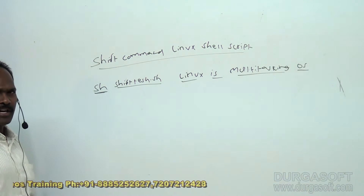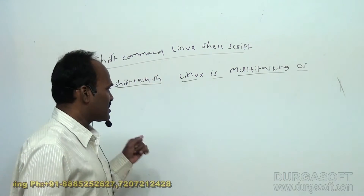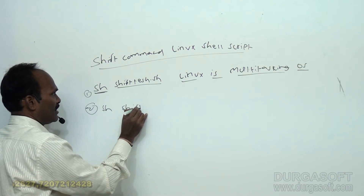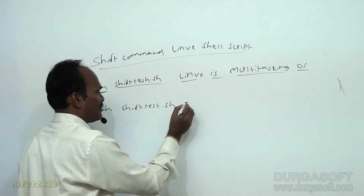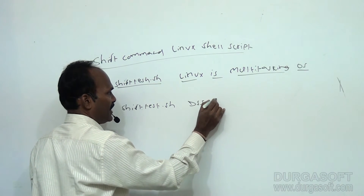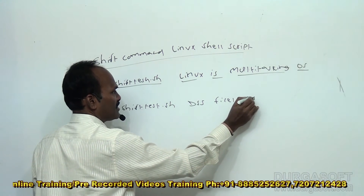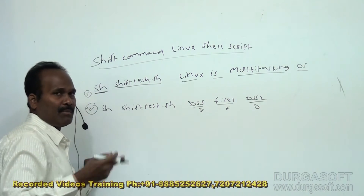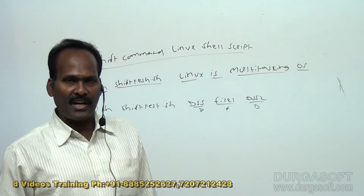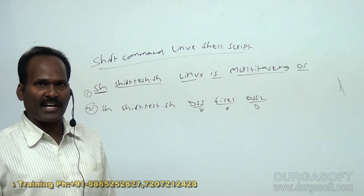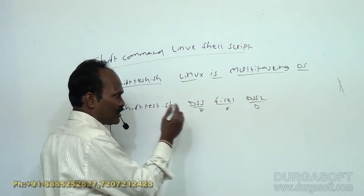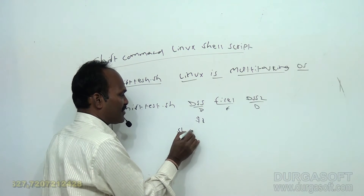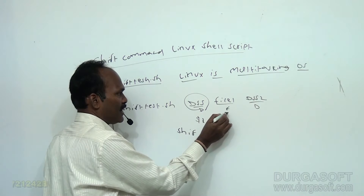Reading means you can perform any kind of operation. For example, if I give shift_test.sh with arguments like dss, file1, and file2, where dss is a directory and file1, file2 are files, I want to check each command-line parameter whether it is a file or directory. When the program starts, the first argument becomes dollar one. After shift, the next argument becomes dollar one.